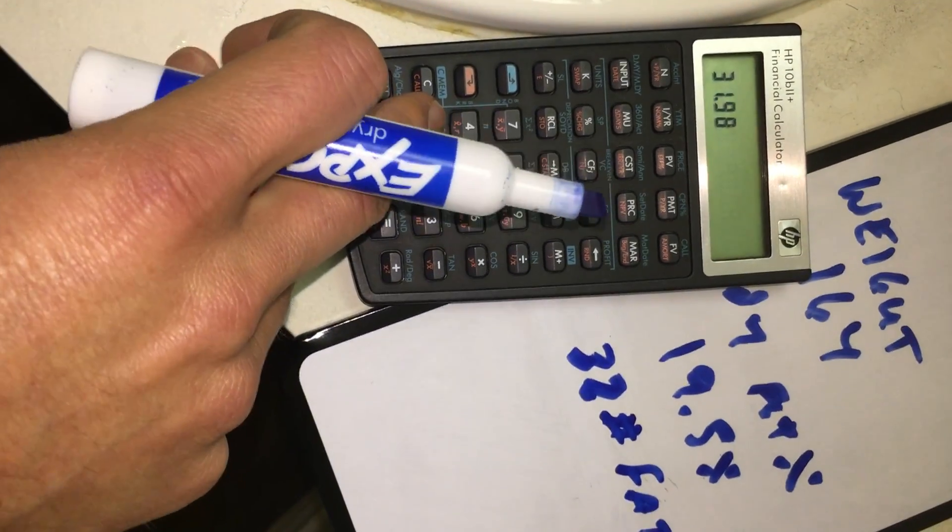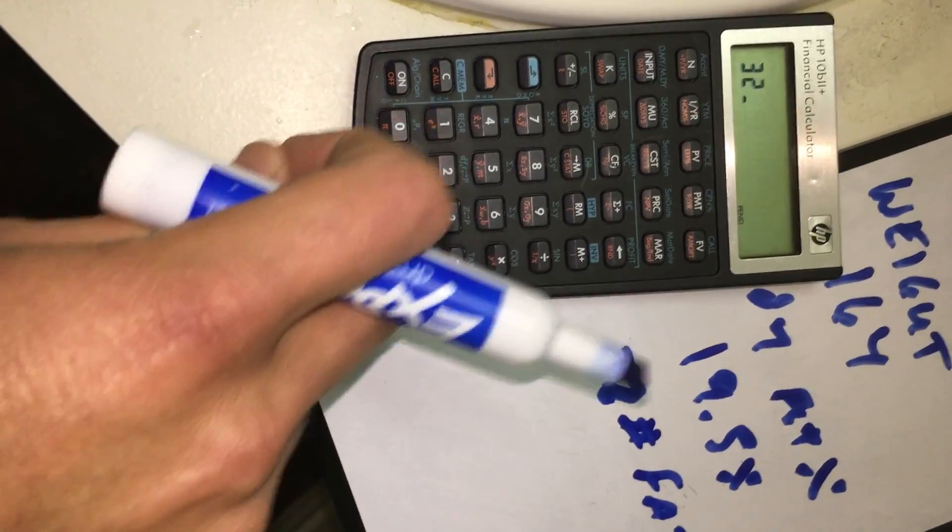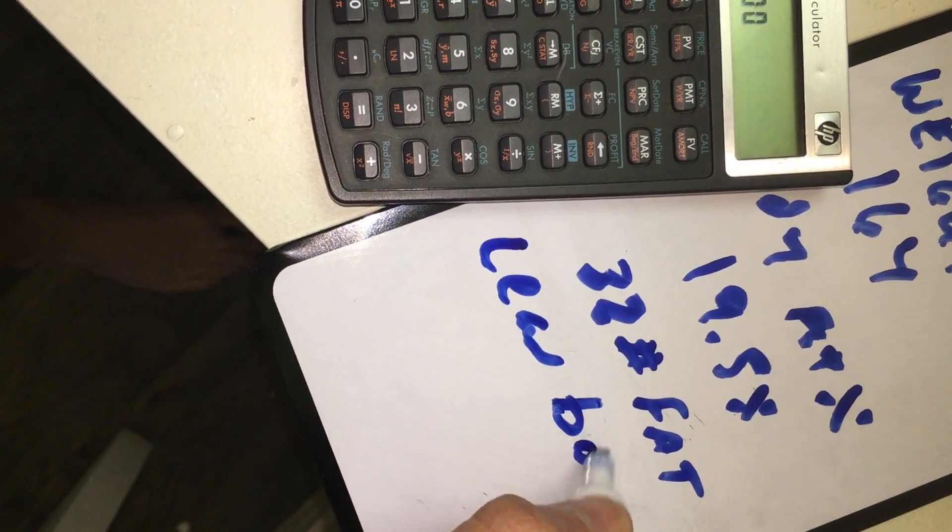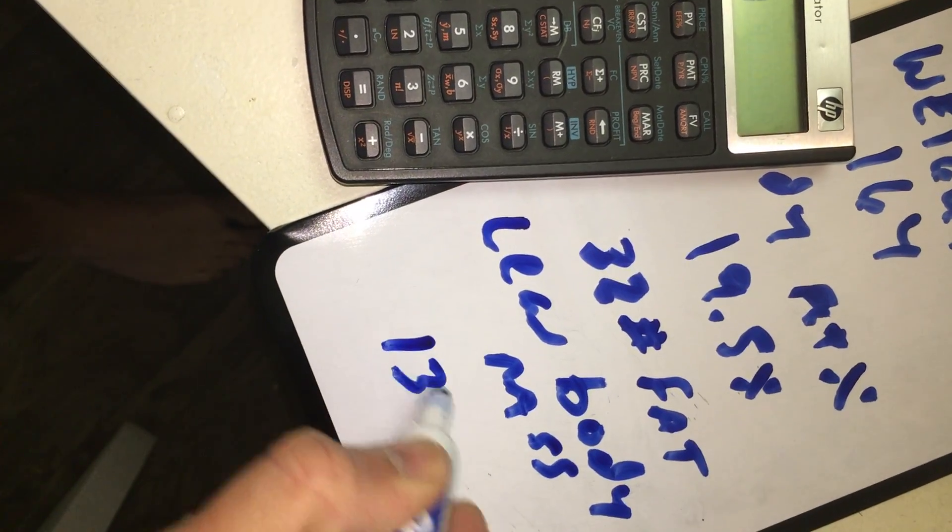And then what you're going for is your lean body mass. So 164 minus 32, what's called my lean body mass, is 132.